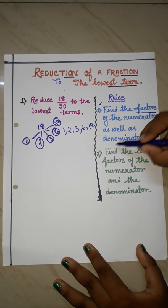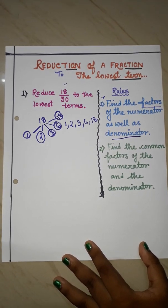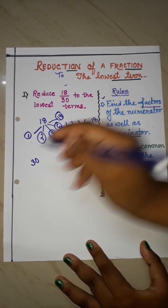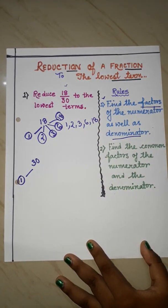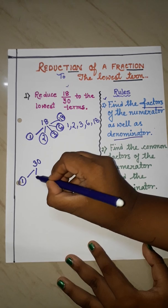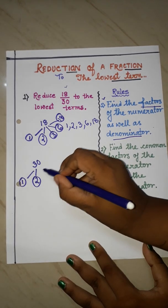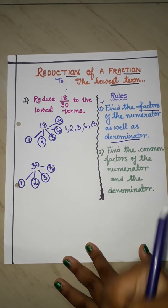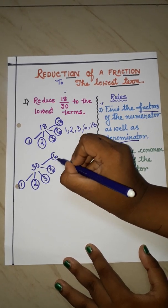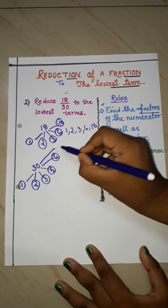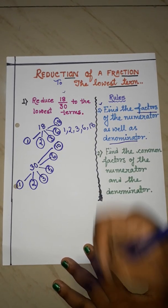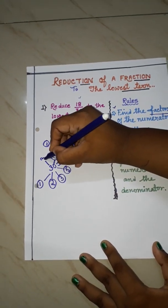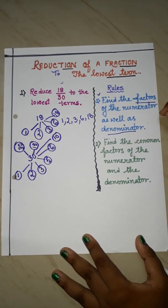Next, we will find the factors of the denominator. What is in the denominator? 30. So we will find out the factors of 30. The factors of 30 are: 1, 2, 3, 5, 6, 10, 15, and 30 itself.